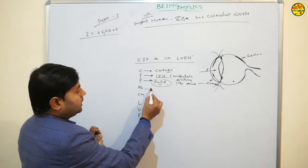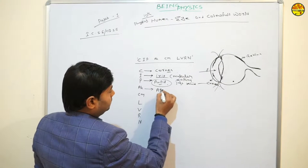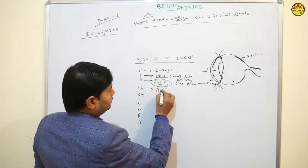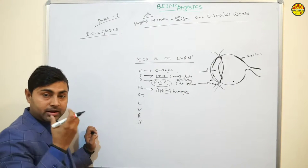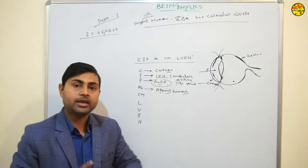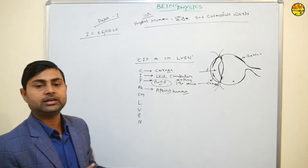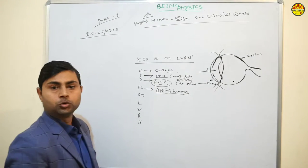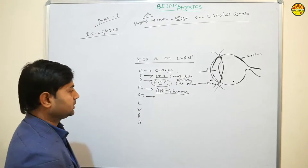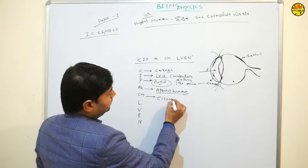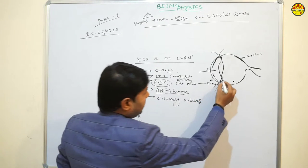A-H stands for Aqueous Humor. Aqueous humor is a lubricant. Our eyes are very sensitive, and the aqueous humor maintains the flexibility and shape of the eye. Next is C-M, which stands for Ciliary Muscles. The ciliary muscles hold the eye lens in position.